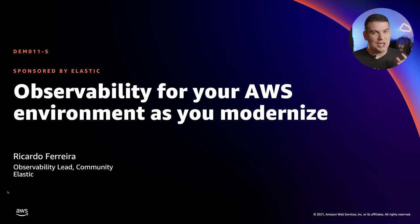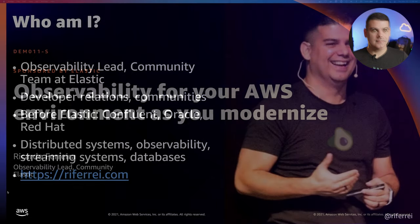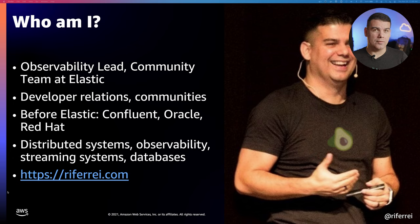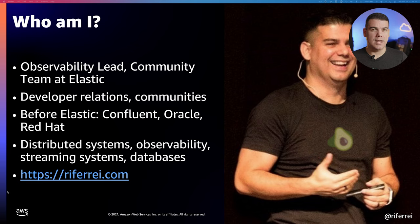But before we get into this, let me introduce myself. For those of you that don't know me — hello there! My name is Ricardo Ferreira and I work for Elastic in the developer relations team, also known as the community team. There I am a developer advocate with a specific focus on observability. Before Elastic, I used to work for other vendors such as Confluent, Oracle, and Red Hat, where I've built extensive experience in the areas of distributed systems, observability, streaming systems, and databases.